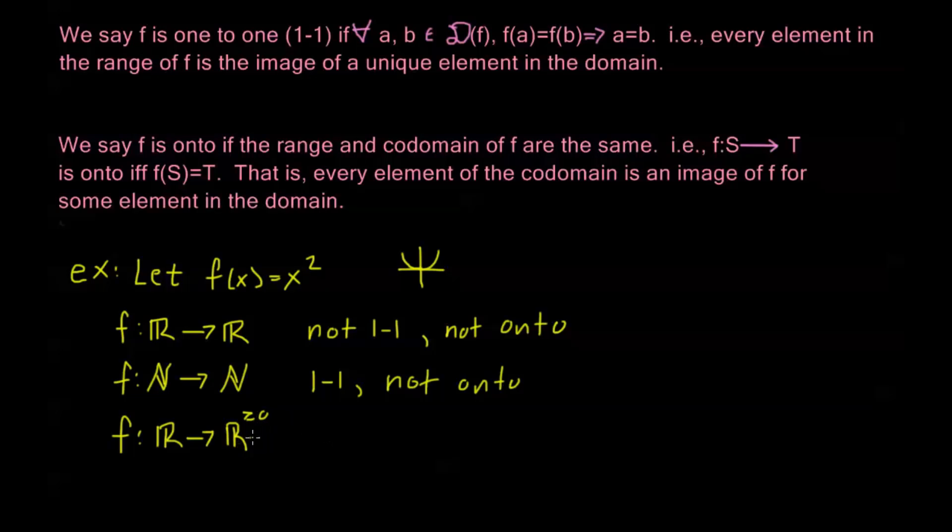This is my new codomain, but I'm still coming from reals. So that means that I'm going to have f(1) equals 1, and f(-1) equals 1. So it's still not going to be one-to-one.